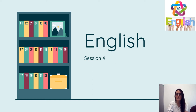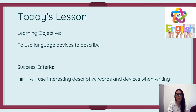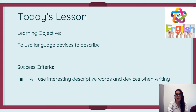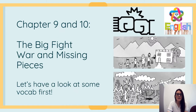Welcome to session four of our summer school. Today we're going to be looking at chapters nine and ten of 'The Boy at the Back of the Class.' Today's lesson our central objective is to use language devices to describe, and you are going to do a piece of writing independently using descriptive words and interesting techniques. Let's have a look at chapters nine and ten.